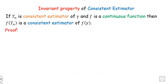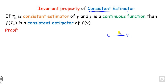So what is the invariant property of the consistent estimator? In the last lecture we discussed what is the consistent estimator and how you can check whether any estimator is consistent. So if t_n is the consistent estimator of gamma and f is a continuous function, then f(t_n) is also the consistent estimator of f(gamma). That is the meaning of the invariant property.